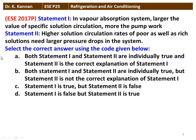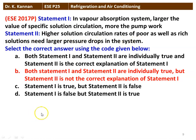The next question from the 2017 question paper — two statements on vapor absorption systems. Statement one: larger the value of specific solution circulation, more will be the pump work. Statement two: higher solution circulation rate of poor as well as rich solution requires larger pressure drop in the system. Both statements are individually true, but statement two is not the correct explanation of statement one.